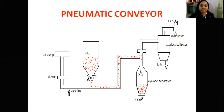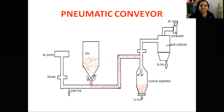The pneumatic conveyor has a rotary feeder valve. There is a hopper where the feed is introduced. The feed goes through the rotary feeder valve. After that, the air pump connects with a pipeline and the air stream comes through the rotary feeder valve.